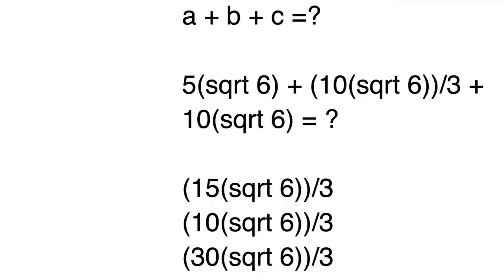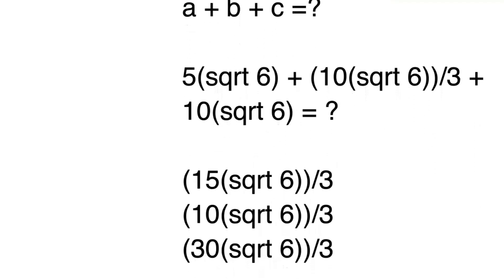Just using some simple simplification here, we're multiplying 5 times square root 6, multiplying the 5 by 3, and dividing it by 3, just so that everything is in order and in terms of square root 6 divided by 3.